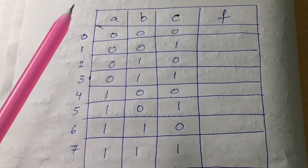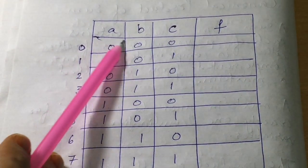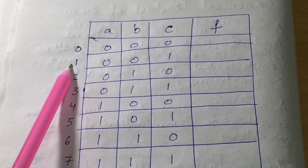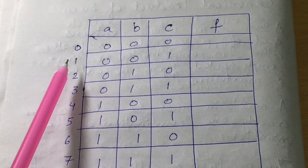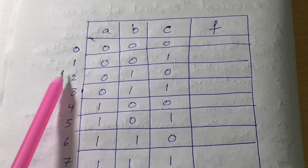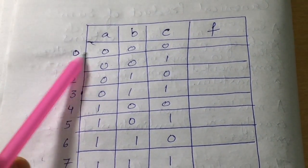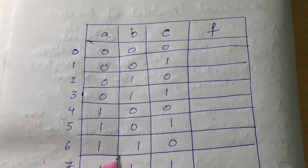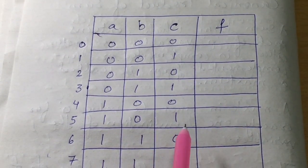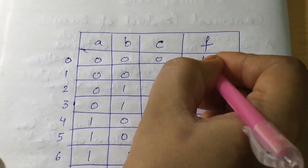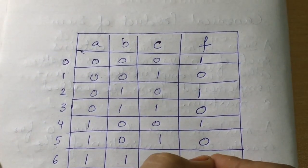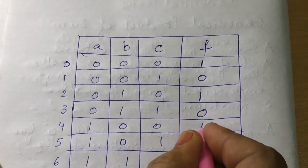Now let's see an example for canonical product of sum. Three variables A, B, C are given. With three variables, 2³ = 8 combinations are possible, from 0 to 7. We find the binary values for these numbers. Let's assume the value of f is: 1, 0, 1, 0, 1, 0, 0, 1.